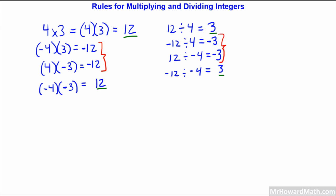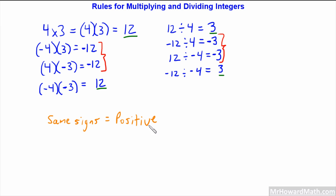You've probably already figured out that we can make some rules from this. With multiplication and division, you have the same rule, which makes it easy. When you have same signs, the solution will be positive. When you have different signs, the solution equals negative.